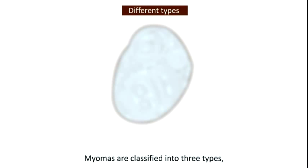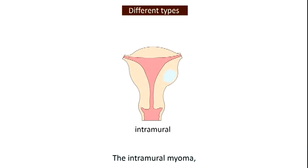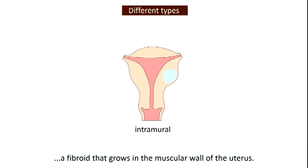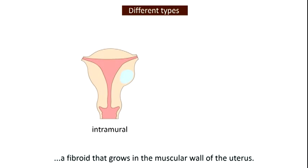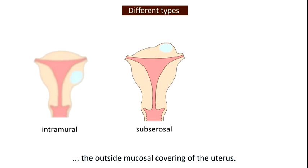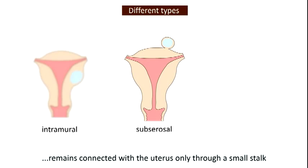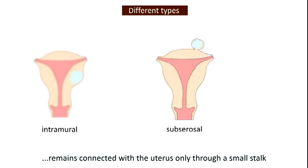Myomas are classified into three types depending on the location where they're found. The intramural myoma is a fibroid that grows in the muscular wall of the uterus. The subserosal myoma is a fibroid located just beneath the outside mucosal covering of the uterus. Here the fibroid projects to the outside and occasionally remains connected with the uterus only through a small stalk.